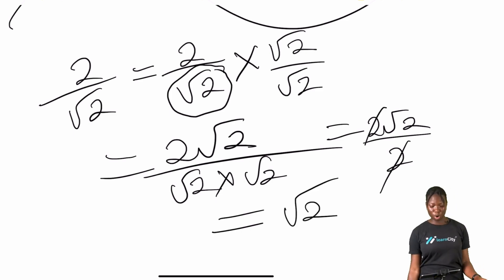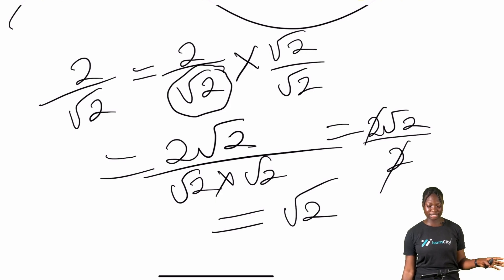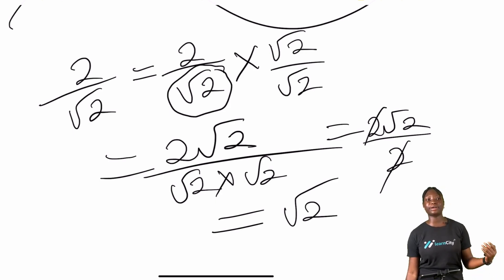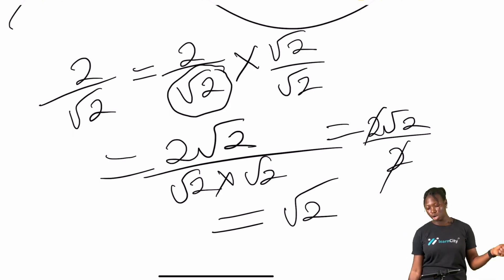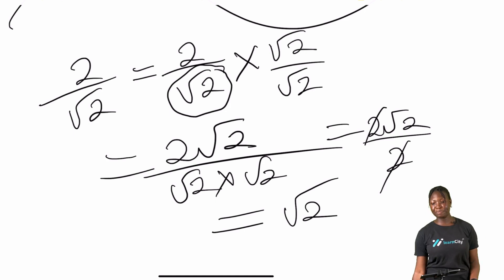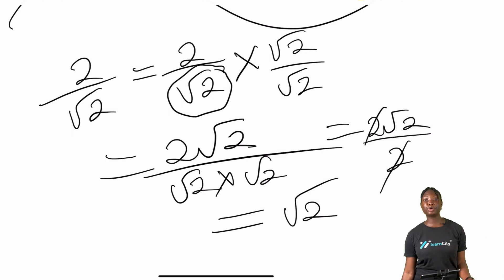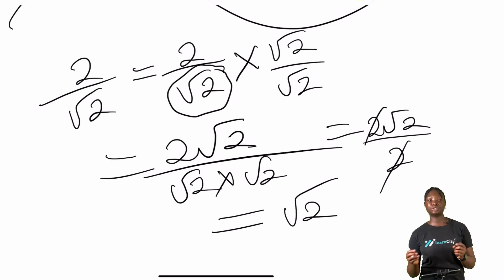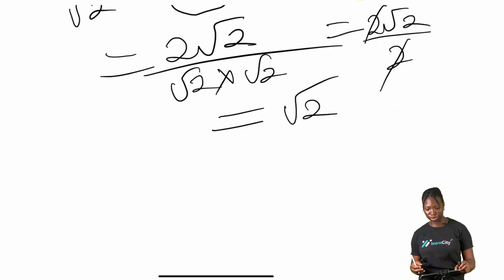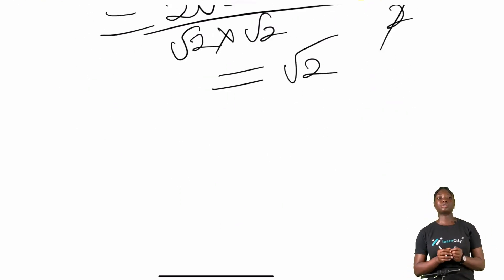This simplifies to root two. So in the case where we have two divided by root two, the answer is root two.